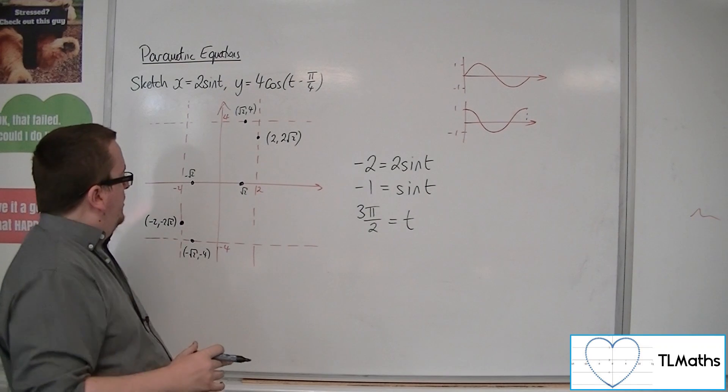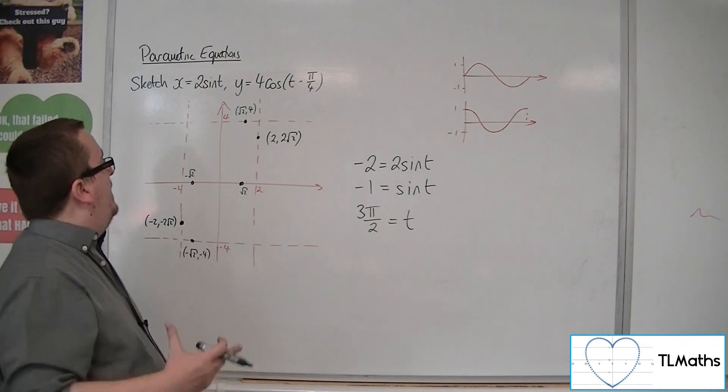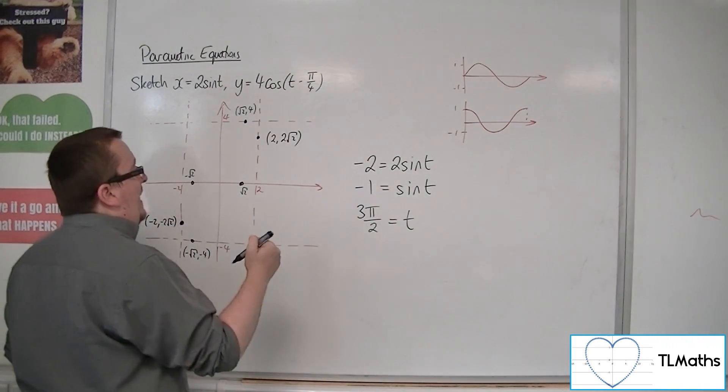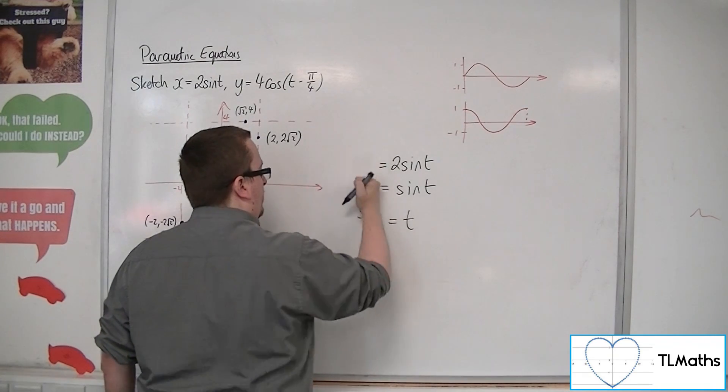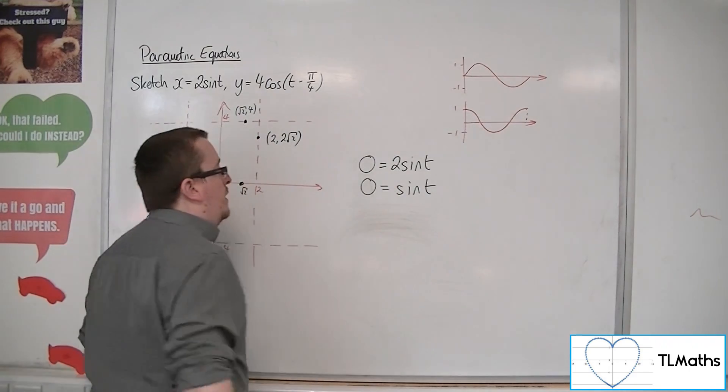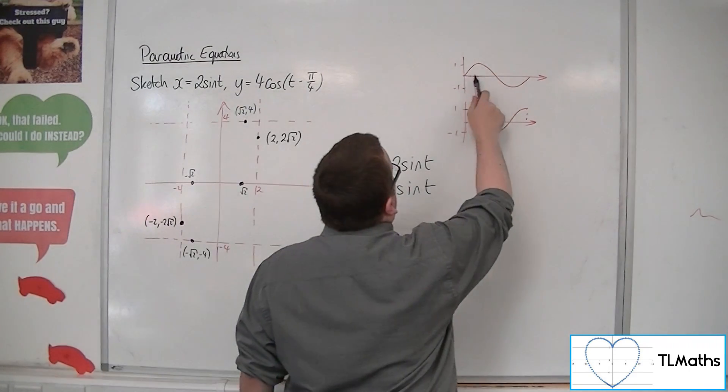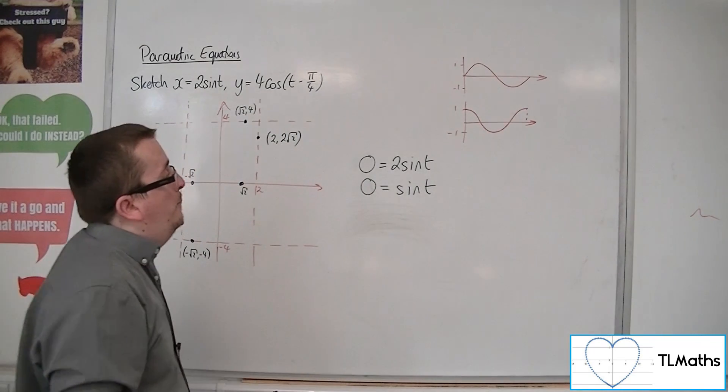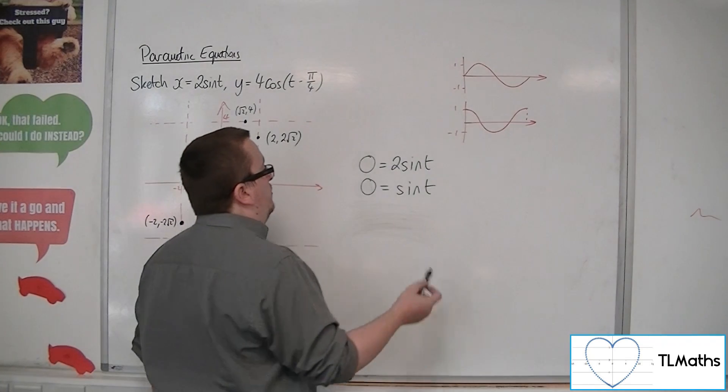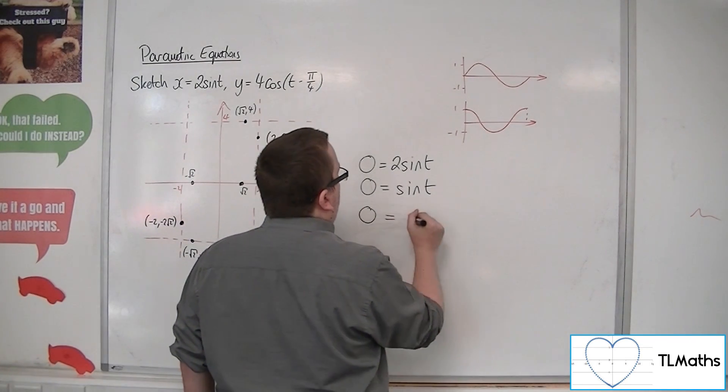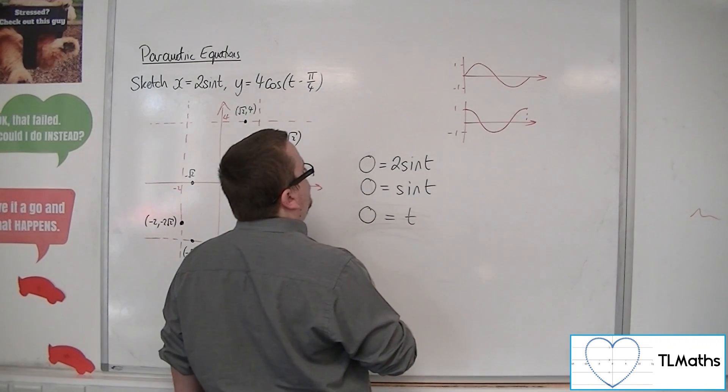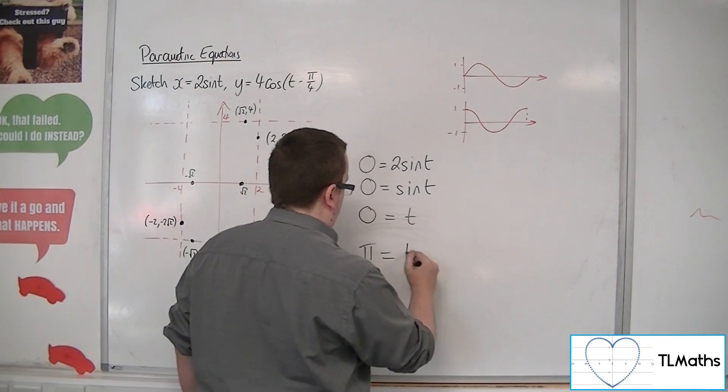Right, so this picture's building up. So let's just now find out where it crosses the y-axis. So that would be when x is 0. So we'd be looking at sine is 0. So that would be at 0, pi, and 2 pi. Now we don't need to look at both 0 and 2 pi. We'll just look at 1. So 0 is equal to t, and also at pi.